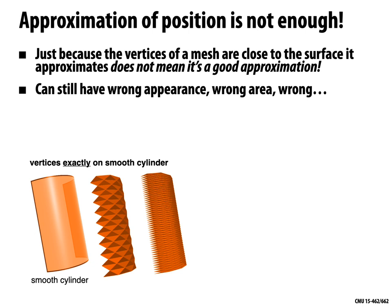For example, with a smooth cylinder: sampling points in nice orderly rows and columns and connecting them into isosceles triangles creates a checkered light-and-dark pattern when rendered. This happens because some normals are tilted up and some tilted down due to how the cylinder was sampled. Even though all normals should stick straight out, improper triangulation gives a very bad sense of what the surface looks like and what the shading looks like.